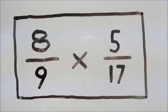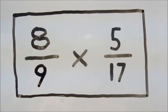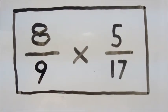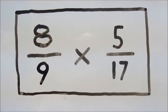In this multiplication problem involving fractions 8 ninths times 5 seventeenths, we cannot cross-cancel.